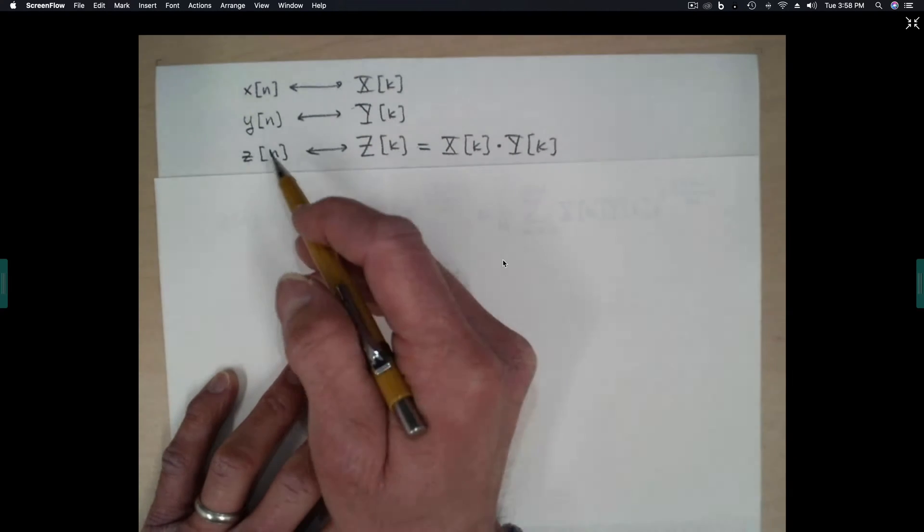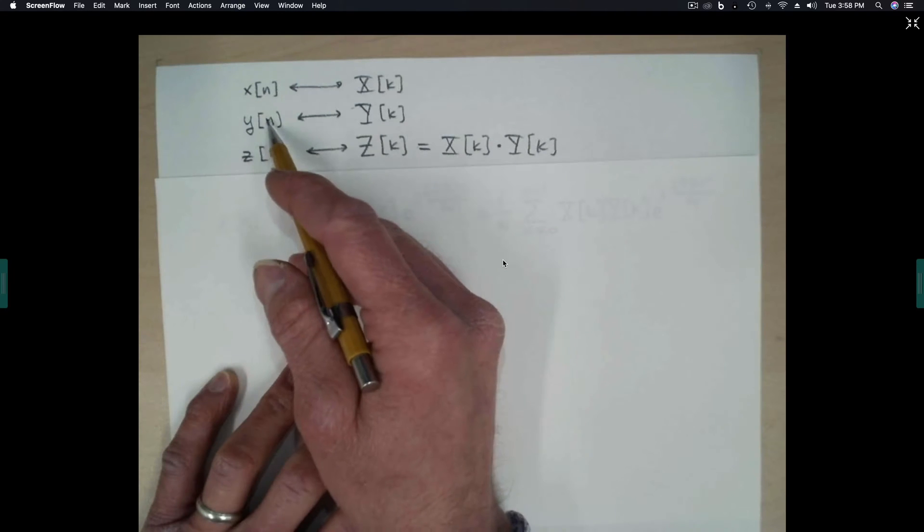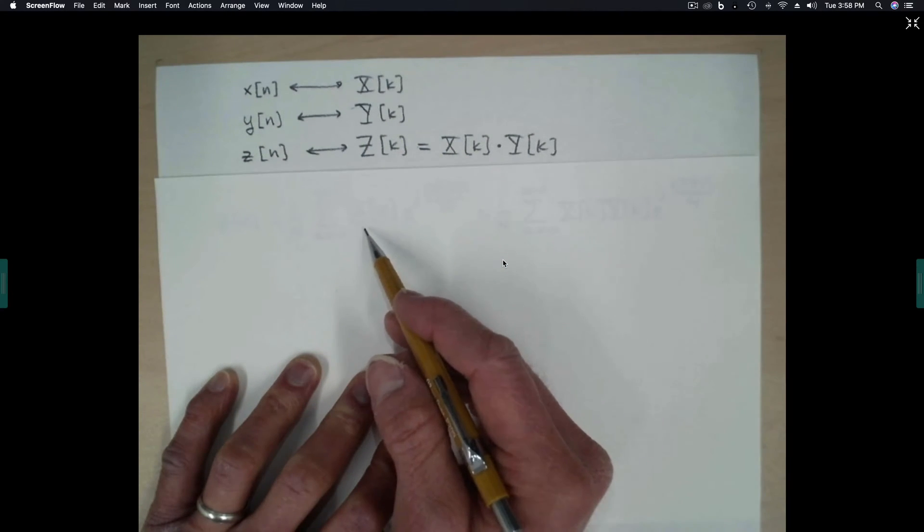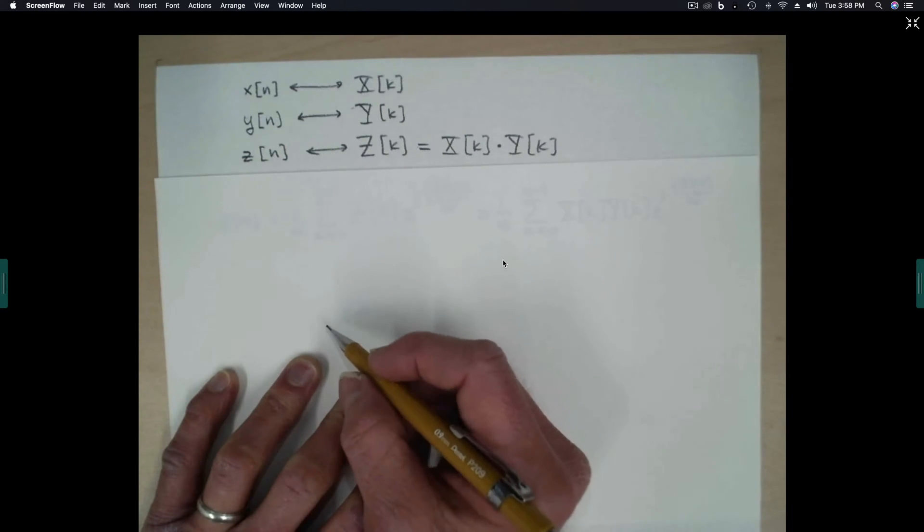And to begin with, let's assume that we have these time domain signals x, y, and z, and their associated DFTs, capital X, capital Y, and capital Z.